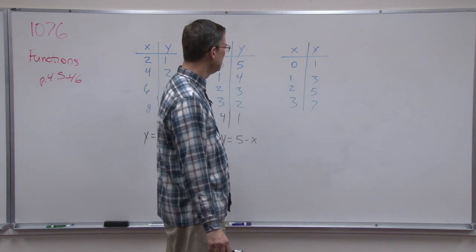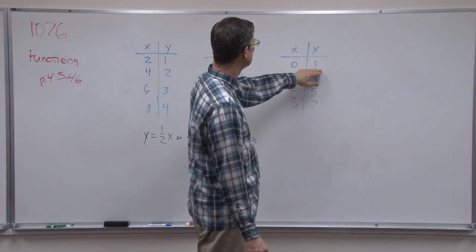So sometimes we have to multiply or divide x in order to get the y value. This one was a subtraction, but we actually start with the bigger number, minus x to get y. Now let's see what happens here. What would I have to do to x to get y?